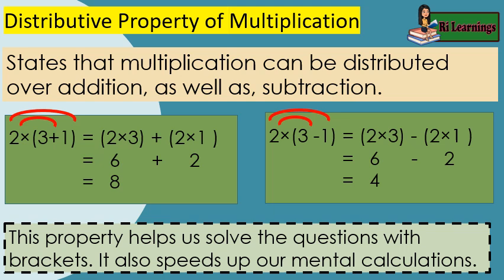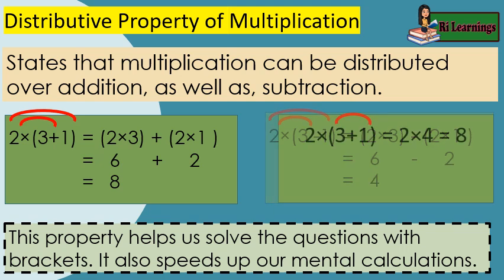The distributive property of multiplication states that multiplication can be distributed over addition as well as subtraction. This property helps us solve questions with brackets and also speeds up our mental calculations. According to the distributive property, multiplying the sum of two or more addends by a number will give the same result as multiplying each addend individually by the number and then adding the products together.